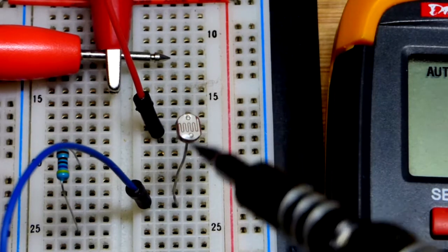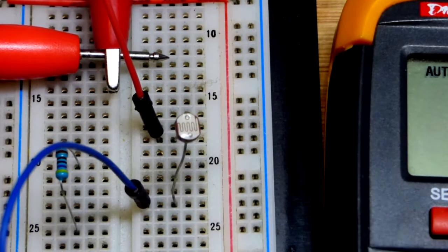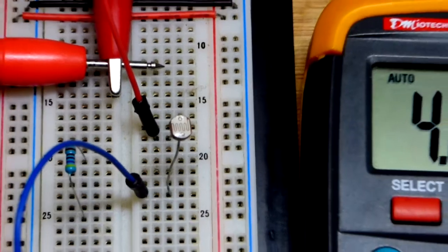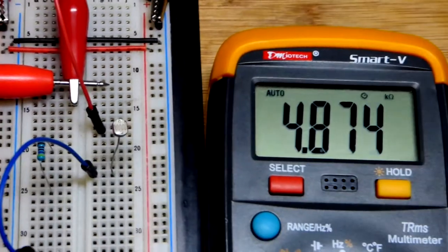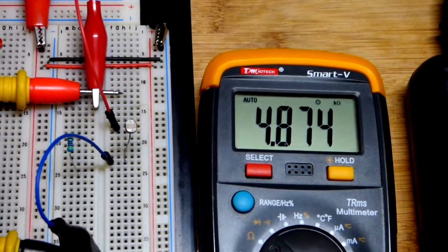In this video we're going to take a quick look at the light dependent resistor. So it's in the name, light dependent resistor. The resistance changes based on how much light is falling on it.